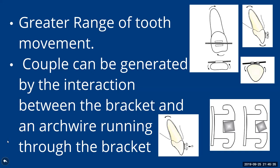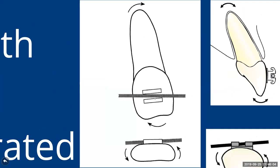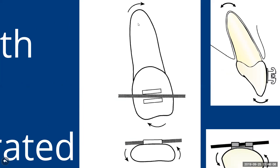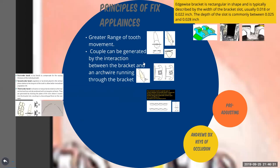Fixed appliances have a greater mesio-distal width of the bracket. With this greater width, when the wire passes through the slot, it can produce a couple and control the position of the tooth in terms of rotation correction or derotation through a two-point contact. Three-dimensional control is developed by the interaction of the arch wire with the walls of the slot. For example, in the labio-lingual direction, if the wire is twisted and inserted into the slot, one force is transferred one way and an equal, opposite force creates a couple, controlling the root position.